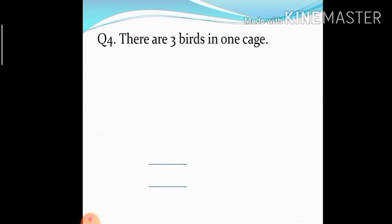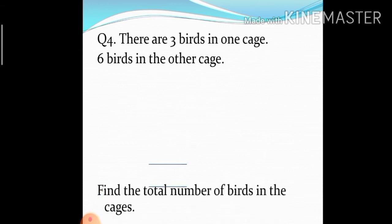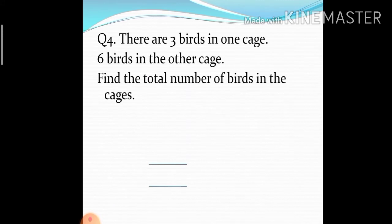Number four: There are three birds in one cage, and six birds in the other cage. Find the total number of birds in the cages.